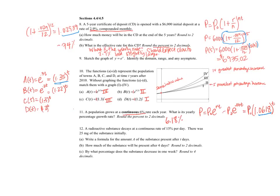A radioactive substance decays at a continuous rate of 15% per day. So that's e to the 0.15t, and the reason I'm using the e is because it says it's a continuous rate. So continuous rate, that means I'm going to use the e.